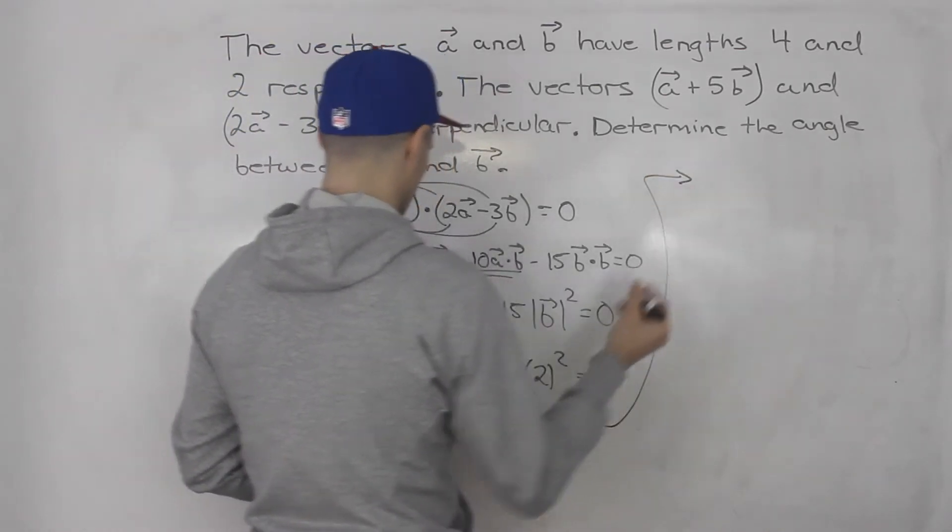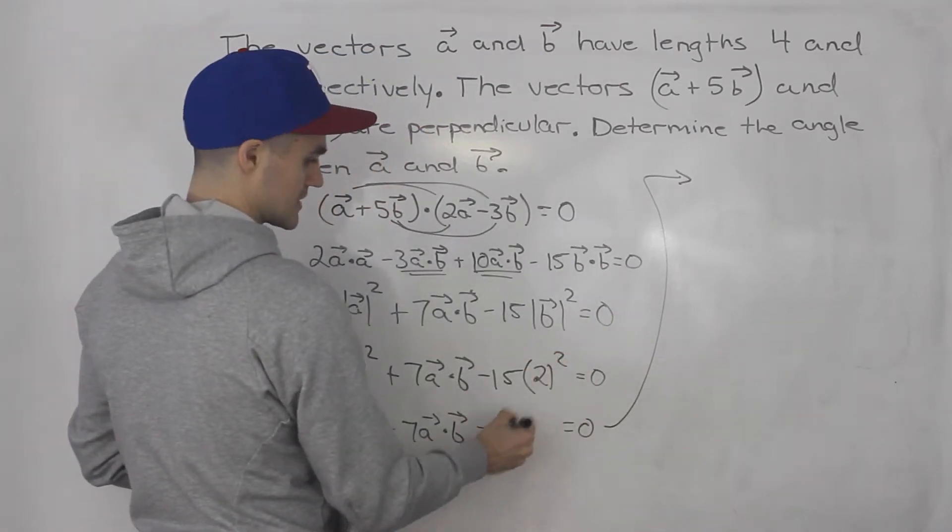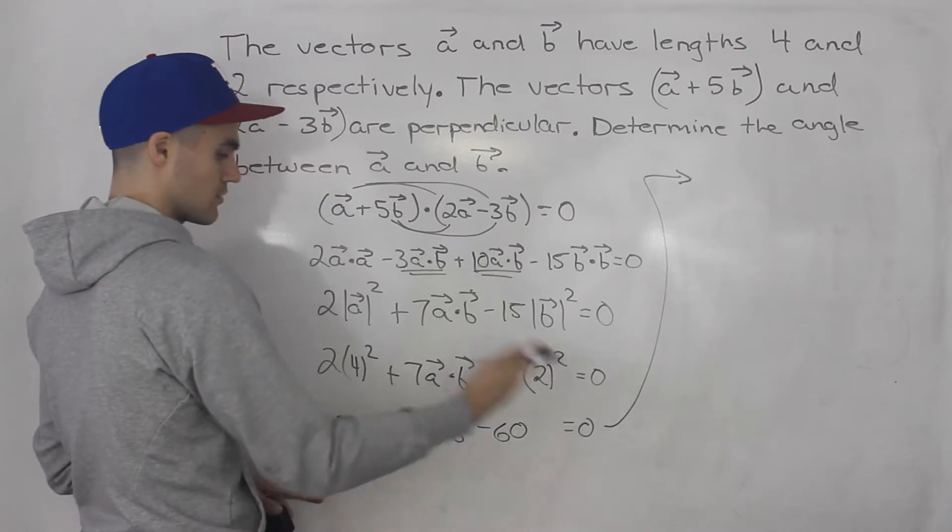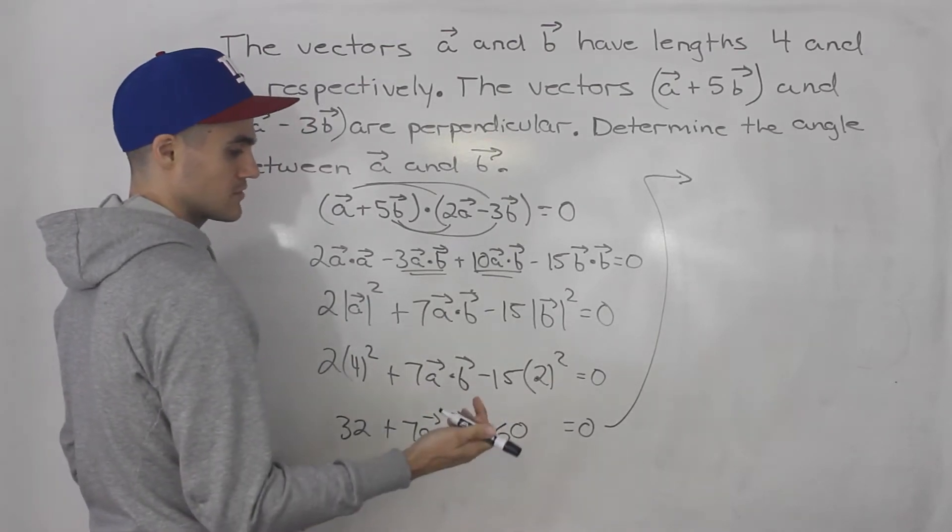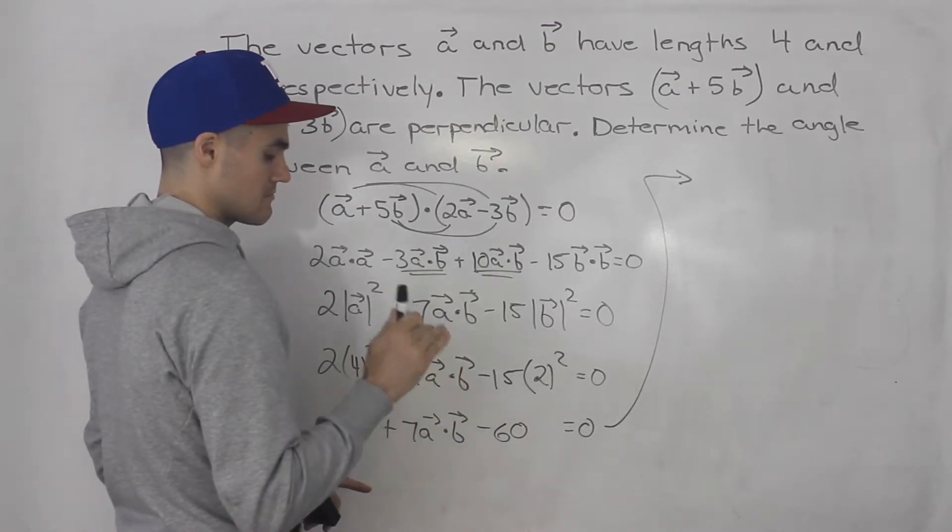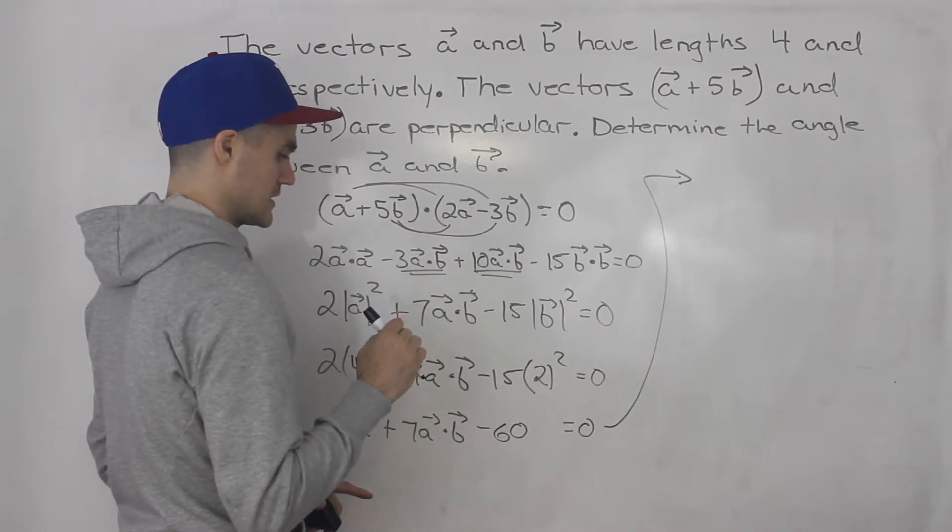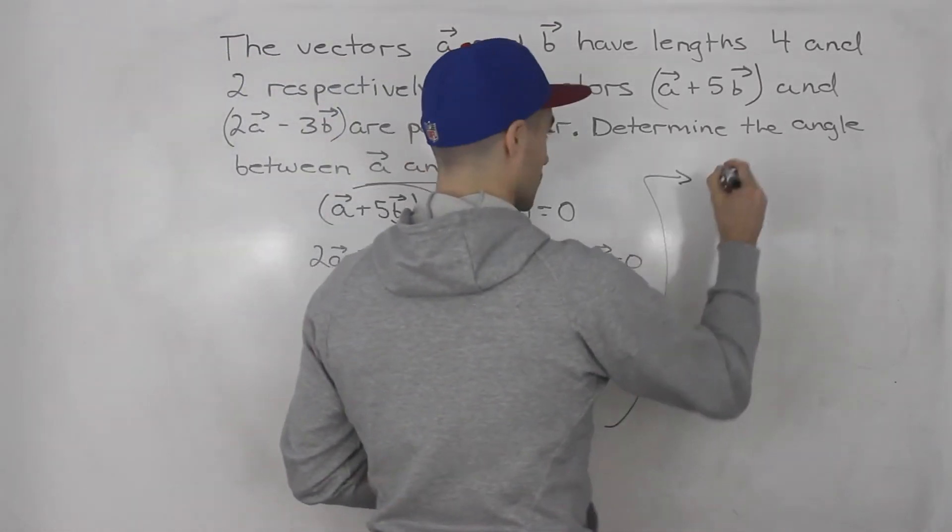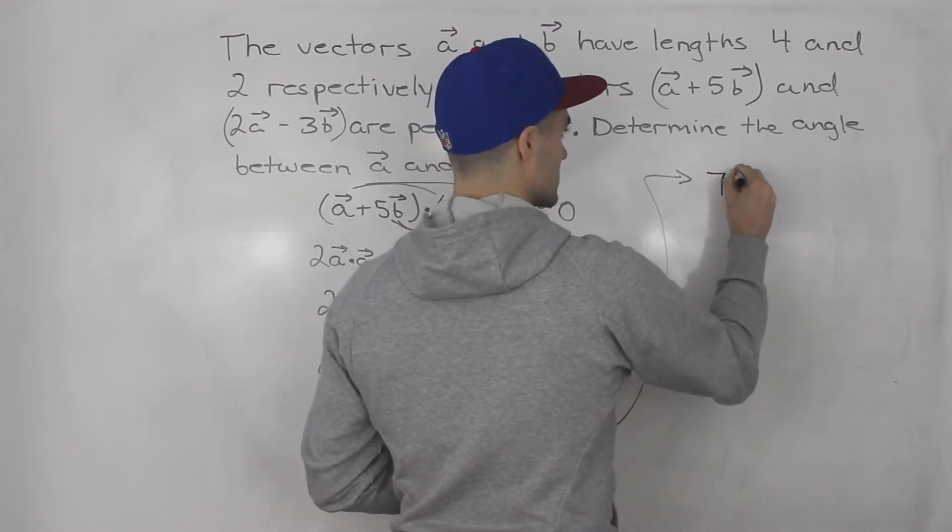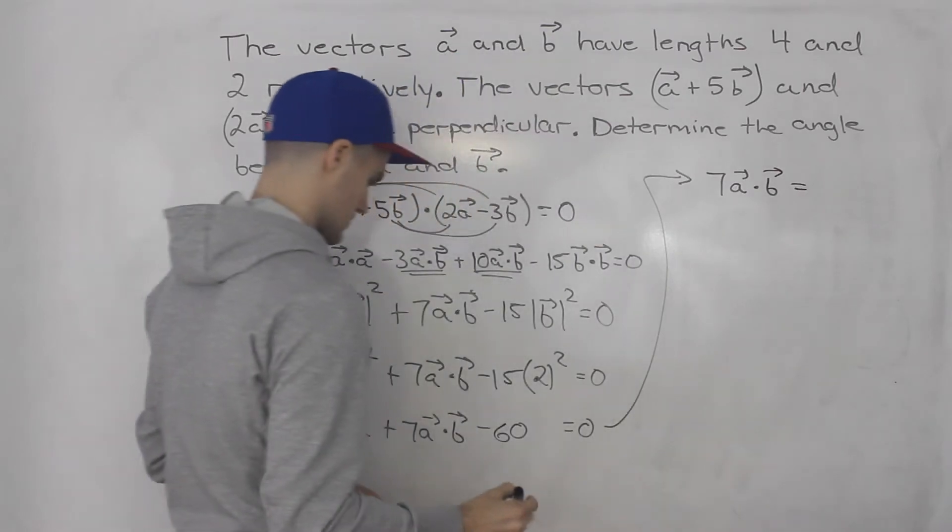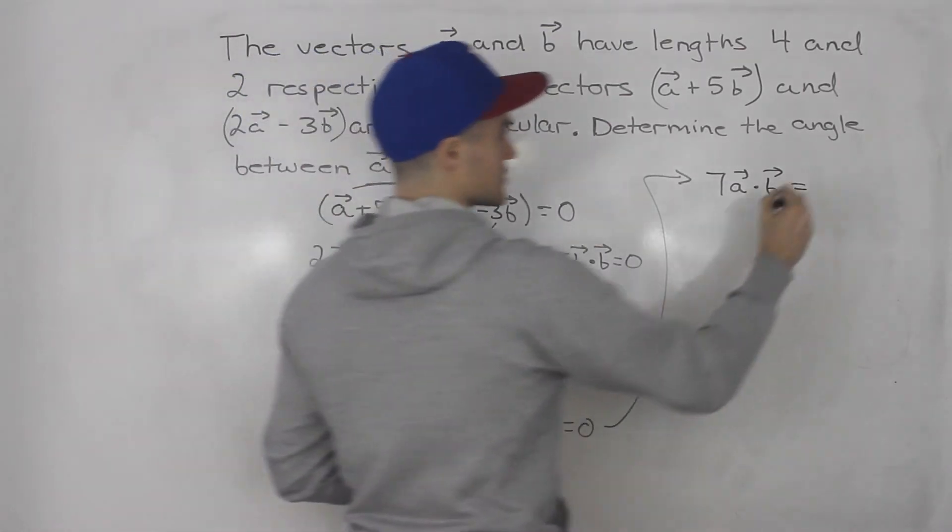Continue this up here. If we bring the 60 over, the -60 over becomes +60. Bring the 32 over becomes -32. 60 minus 32 would give us what? 28. So we would end up with 7a·b = 60 - 32 which is 28.